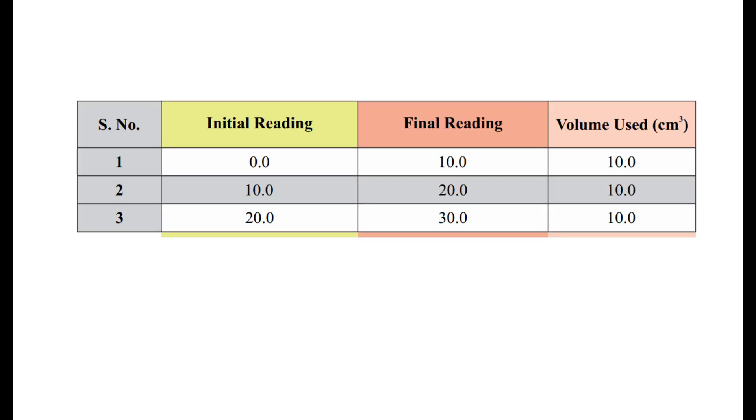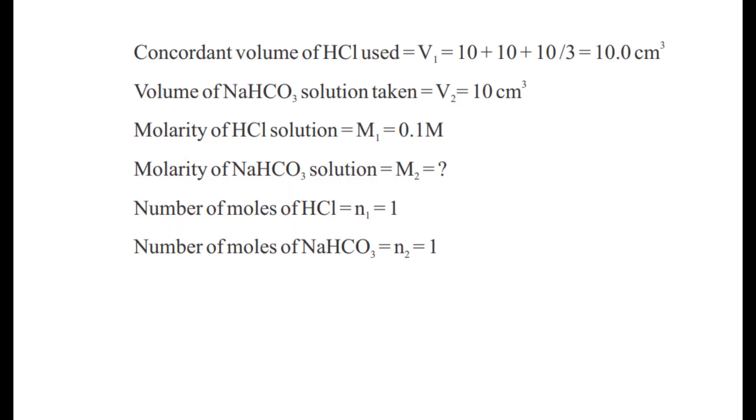Note down the readings in a table and calculate the mean of three values. By calculating the mean, we get the concordant volume of hydrochloric acid as V1, which is 10 cubic centimeters.